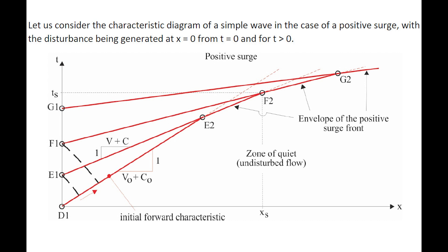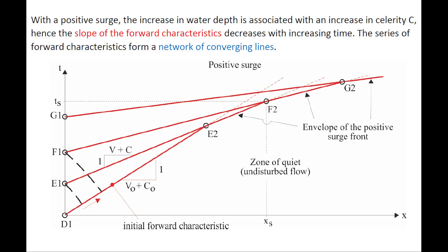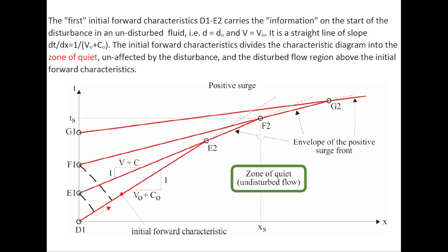Considering the characteristic diagram for a simple wave in the case of a positive surge, with a disturbance generated at x equals zero, starting at a time t equals zero. With a positive surge, the increase in water depth at the boundary is associated with an increase in celerity, hence the slope of the forward characteristics decreases with time. The series of forward characteristics form a network of converging lines. The first initial forward characteristic, line d1–e2, carries information on the start of the disturbance in an undisturbed fluid with velocity v-naught and depth d-naught. Thus it is a straight line, and the initial forward characteristic divides the characteristic diagram into the zone of quiet, unaffected by the disturbance, and the disturbed flow region.